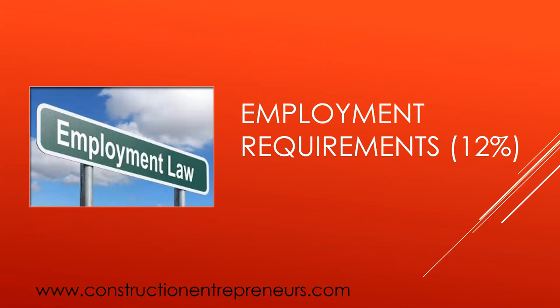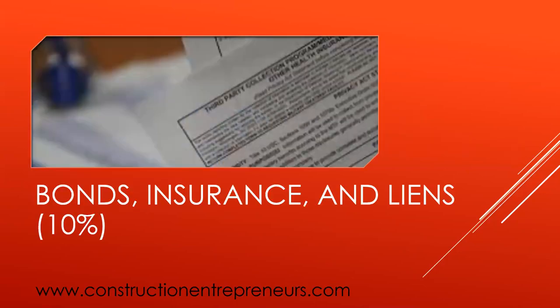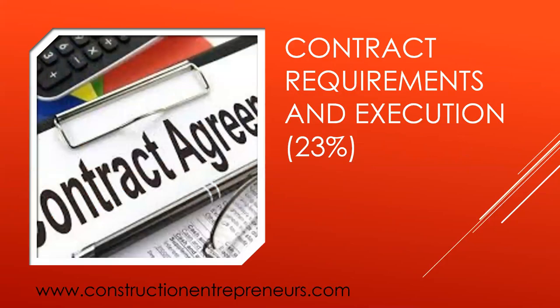Next section is employment requirements at 12% of the examination, and that's going to cover three sections: employment regulations, evaluation and record keeping, and payroll. Number four is going to cover bonds, insurance, and liens at 10% of the examination, and that's going to cover bonds, workers' compensation insurance, liens and other remedies, and other insurance. Next section is contract requirements and execution at 23%, and that's going to cover bidding, cost control, contracts, and payments.